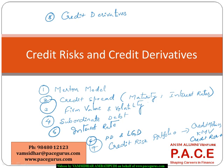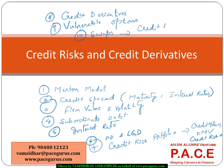We will also talk about vulnerable options towards the end — derivatives with credit risk involved. We will look at how to incorporate credit risk exposure when valuing a swap and other derivatives. We will start off with the Merton model and then move forward.